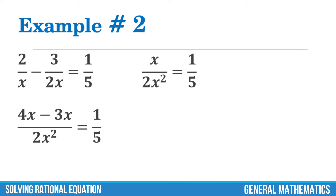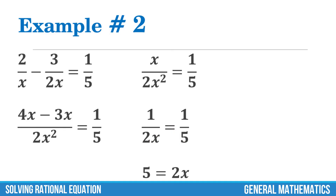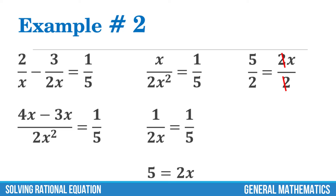We may simplify x over 2x squared — cancel x. The equation will become 1 over 2x equals 1 fifth. Again, do the cross multiplication: 1 times 5 and 2x times 1. Then divide both sides by 2. The value of x is 5 halves.